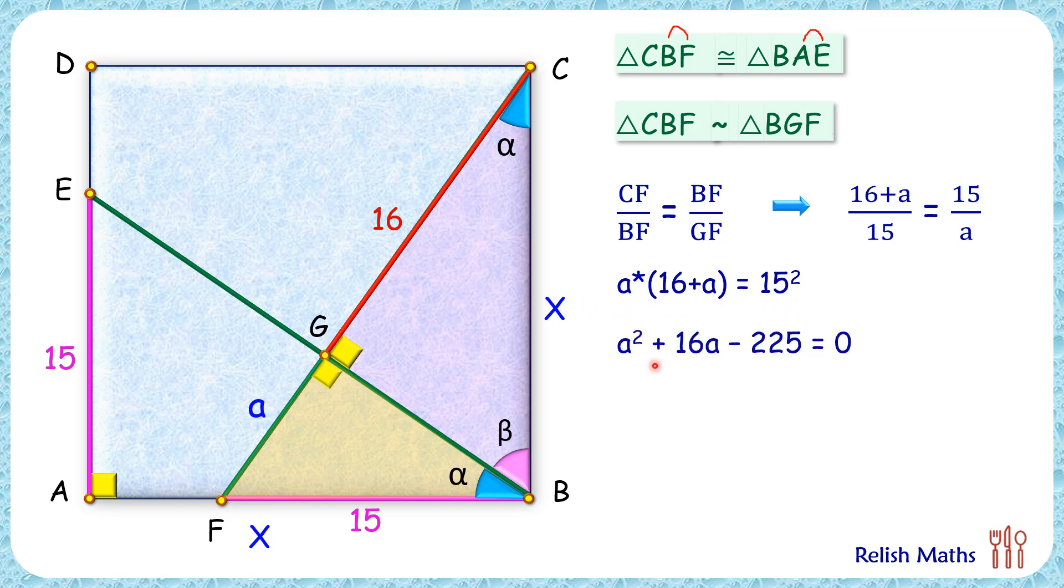Cross multiplying and opening up the bracket, we get a quadratic equation. We'll solve it by factorization. This will be a plus 25 times a minus 9.